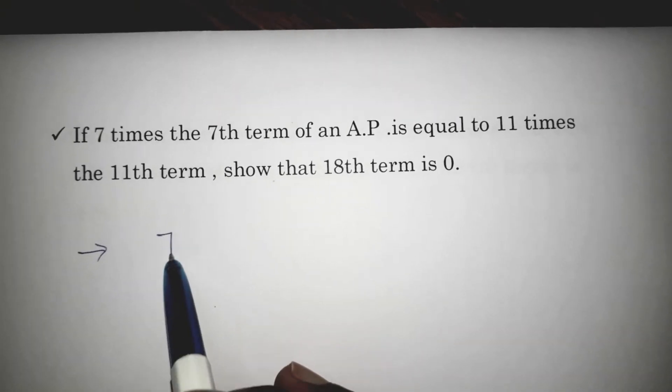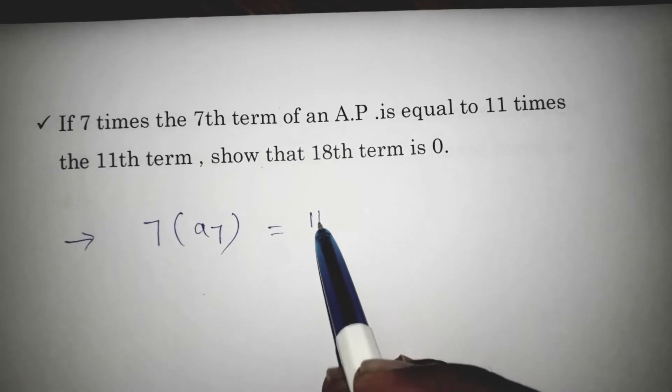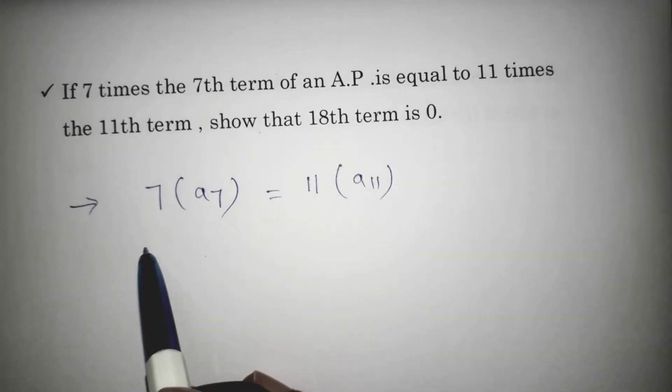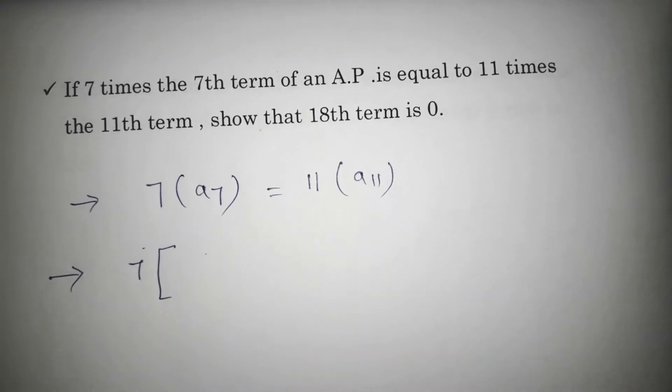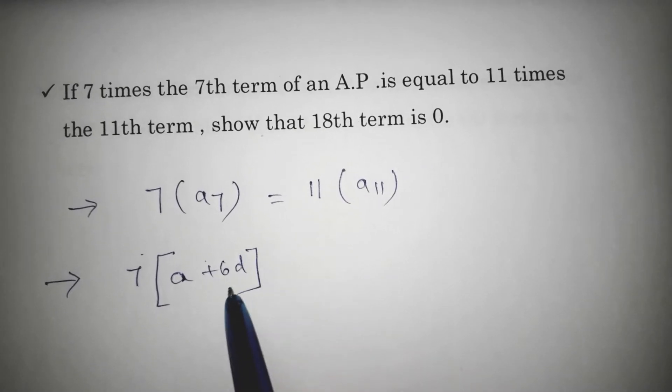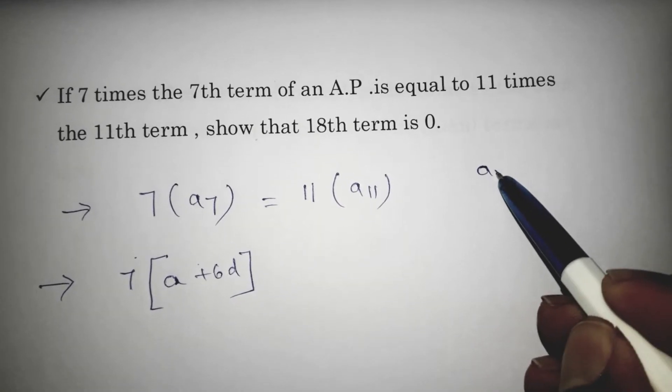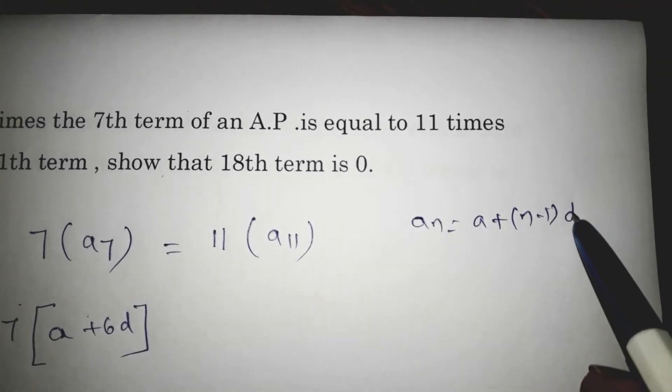It's given that 7 times the 7th term is equal to 11 times the 11th term. So, 7 times the 7th term. The 7th term of an AP is a plus 6d. If you use the formula, a_n equals a plus (n minus 1) times d.